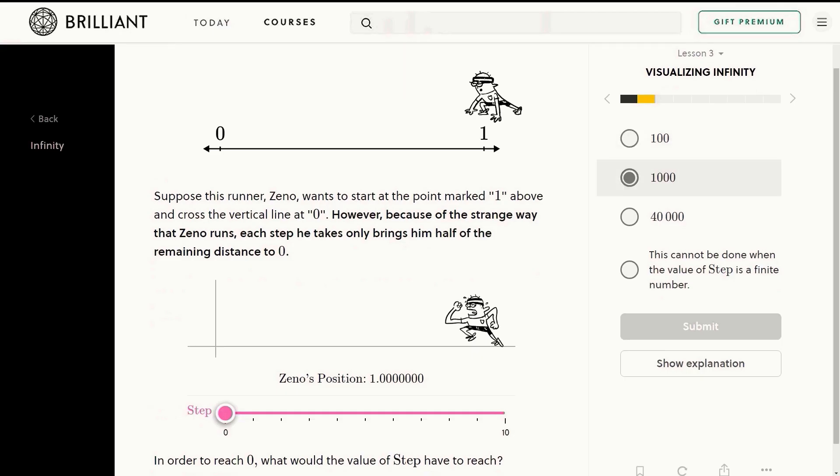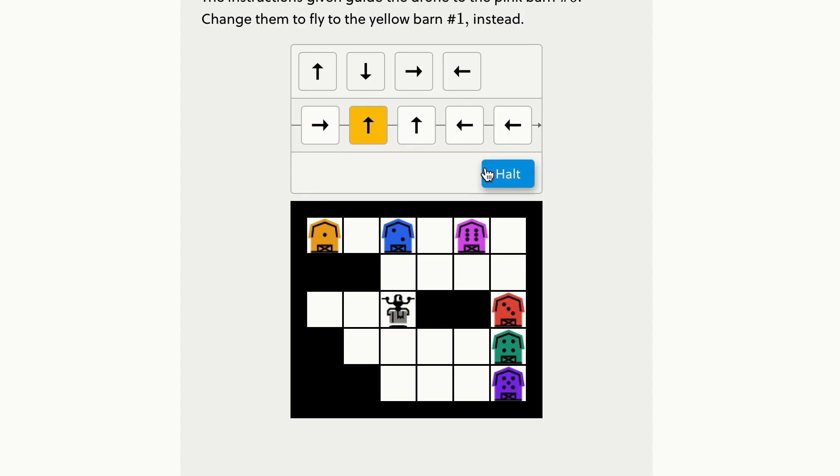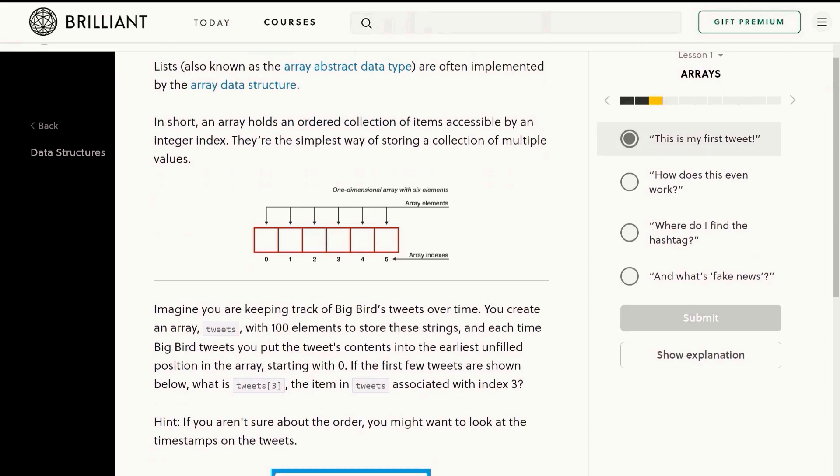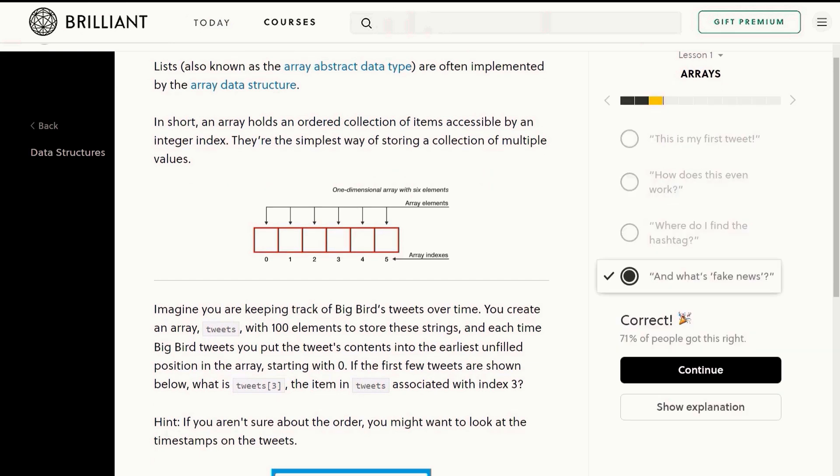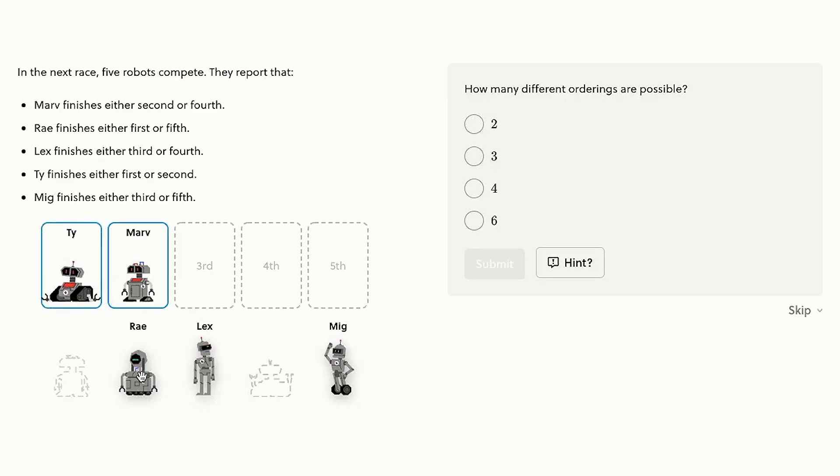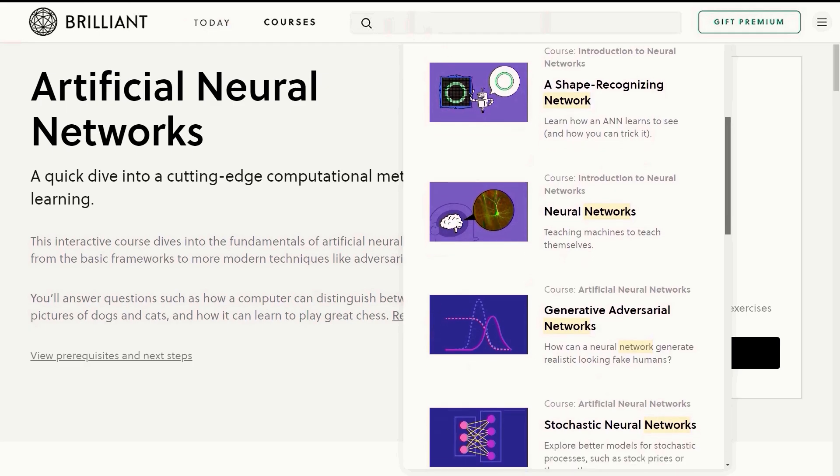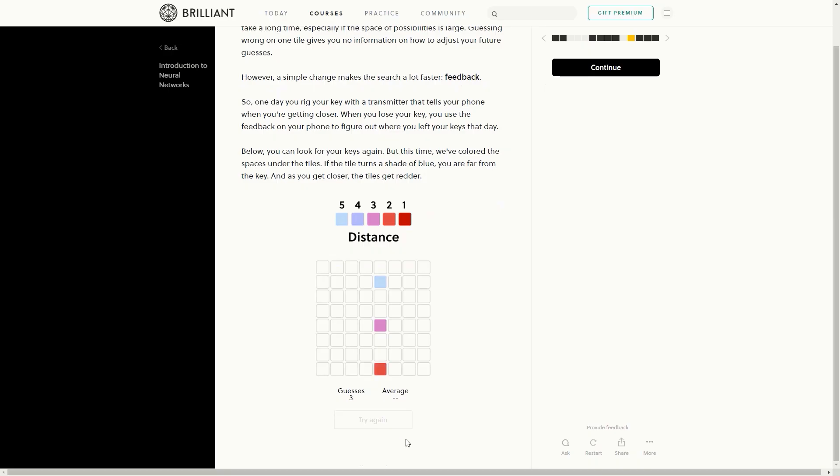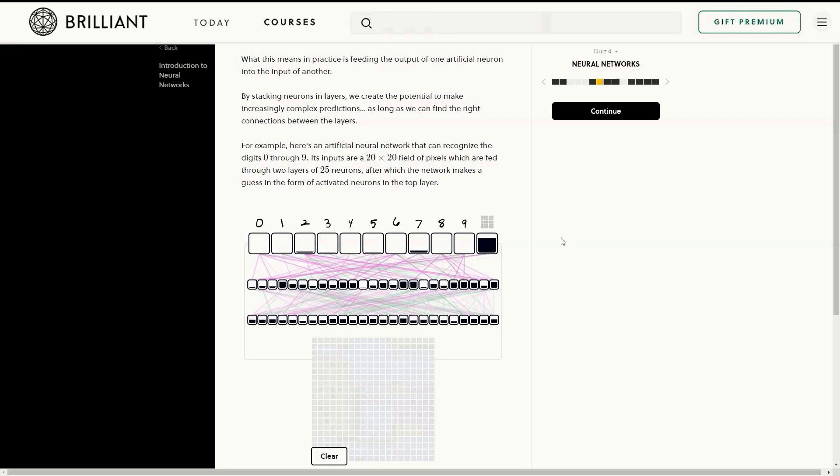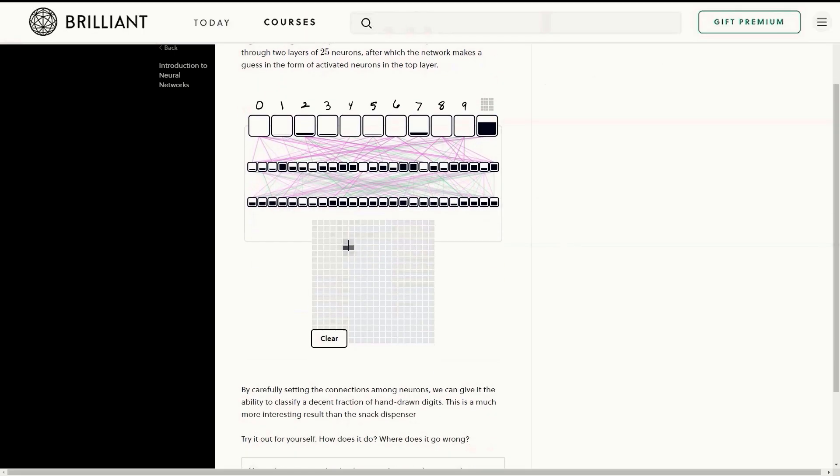Brilliant is a website and app that teaches you all kinds of STEM concepts from computer science through to astrophysics. There's a lot of interactivity in their courses to assist in getting core concepts across. Getting started is free and they have courses for all ability and knowledge levels. The neural network topic is one they cover in a lot of detail.